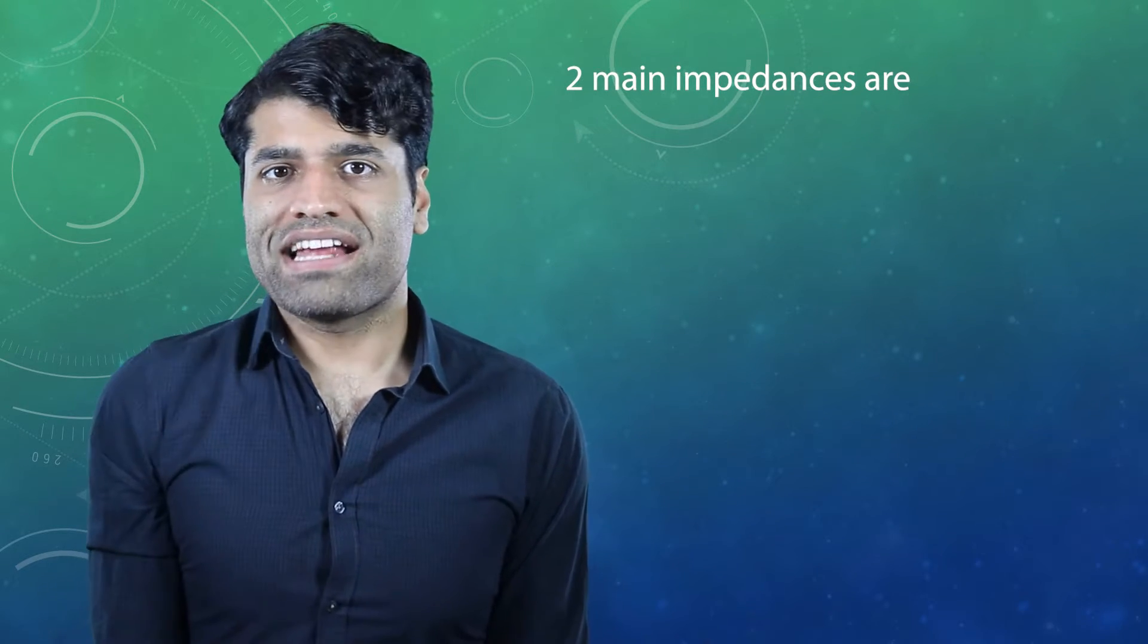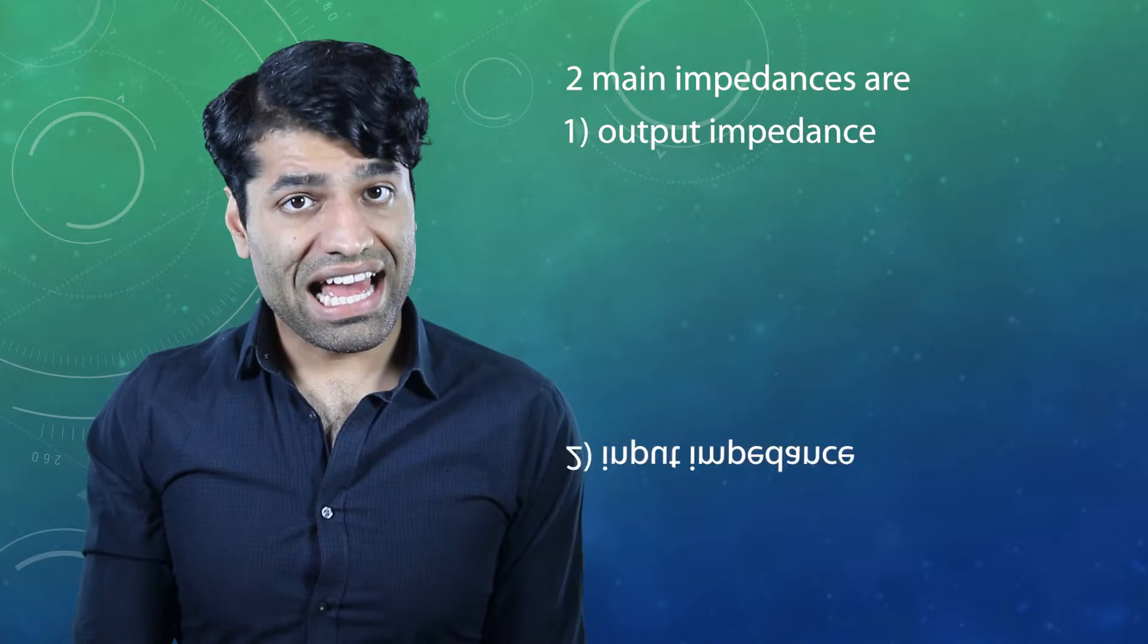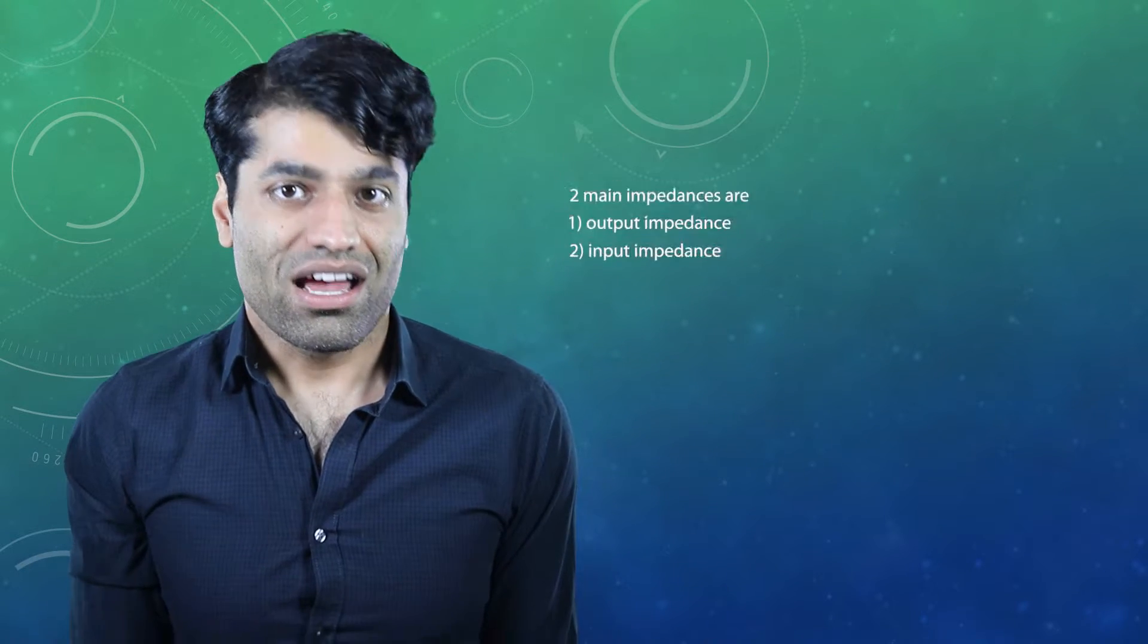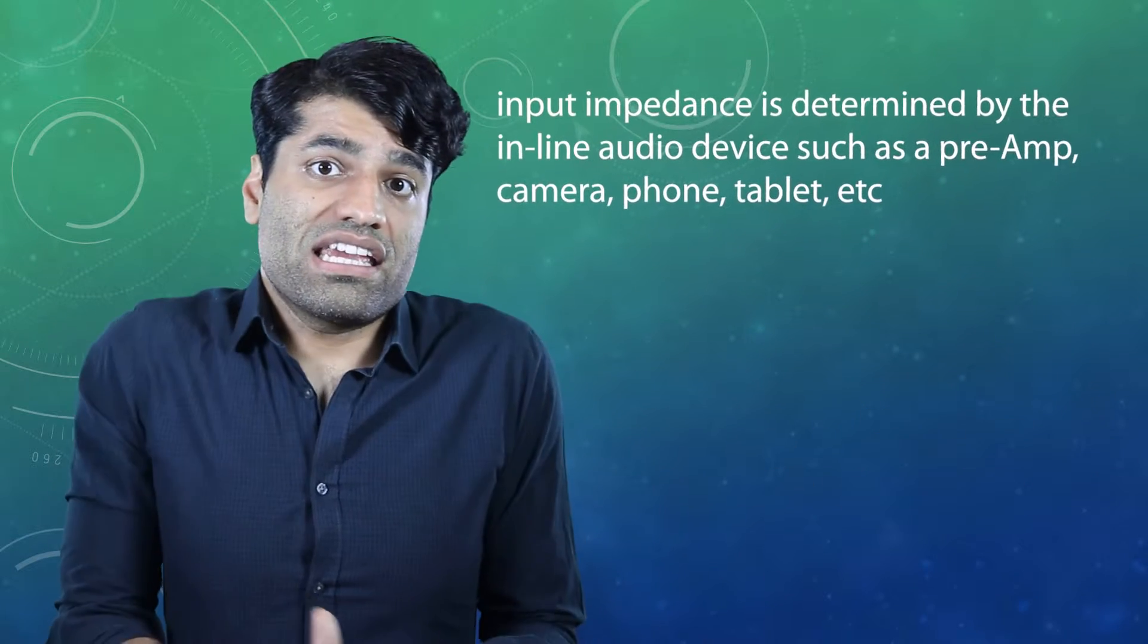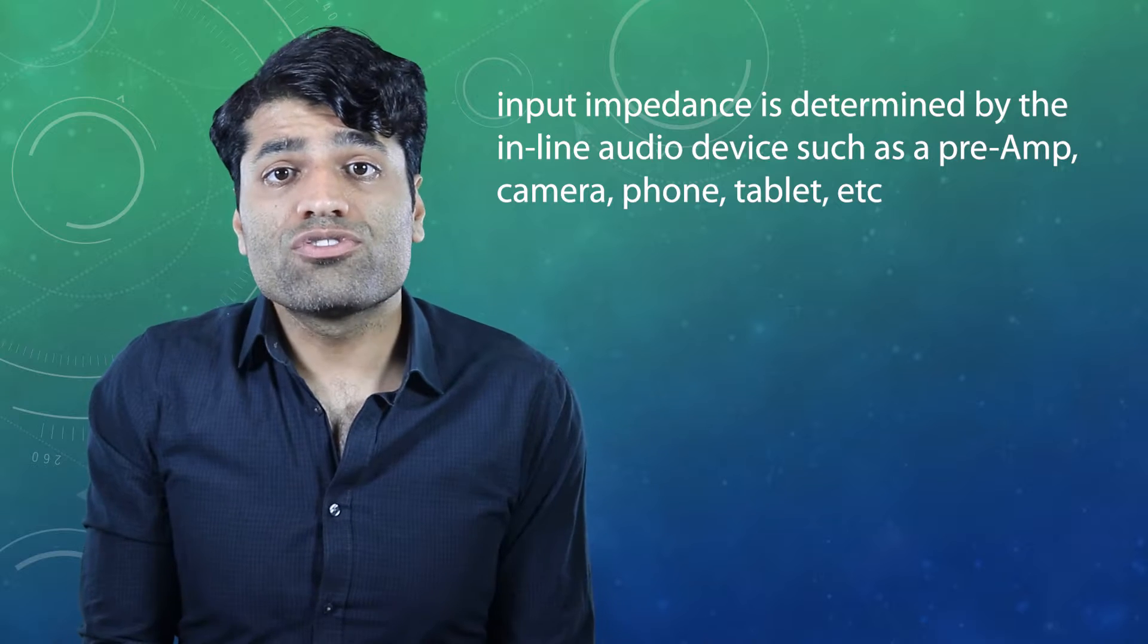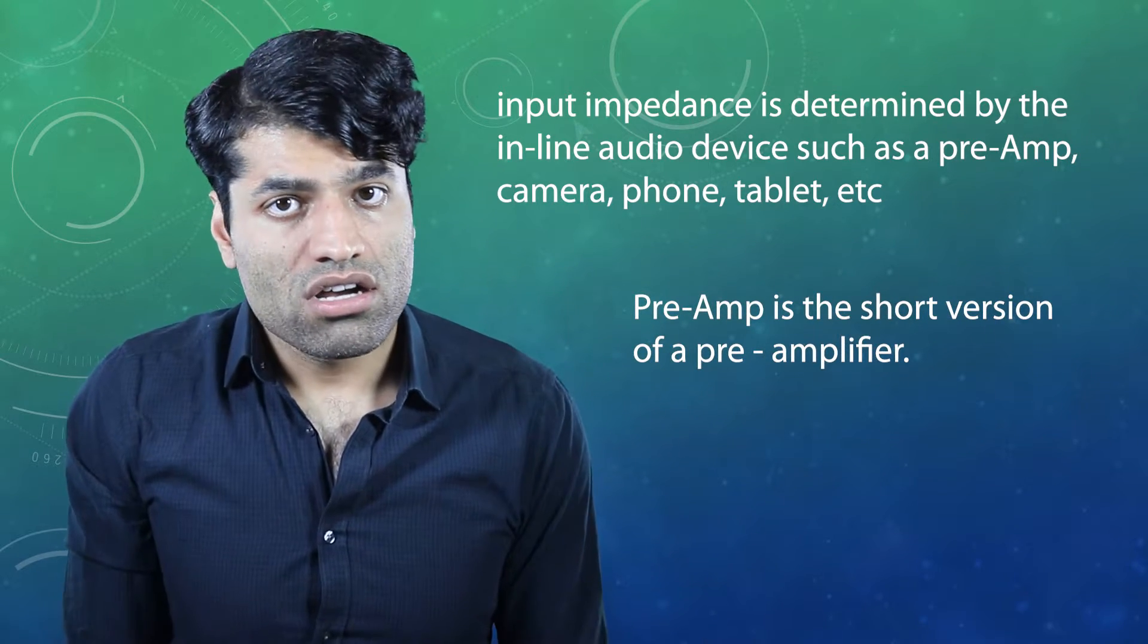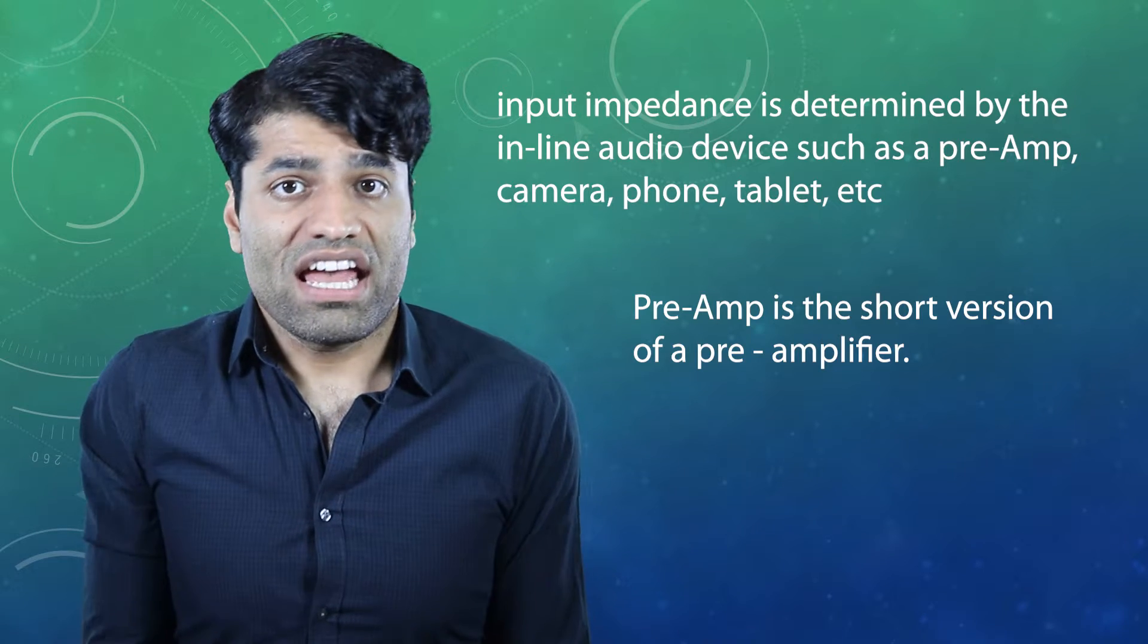There are two main impedances, namely output impedance and input impedance. Output impedance is determined by the microphone and the input impedance is determined by the inline audio device such as a preamp, camera, phone, tablet, etc.